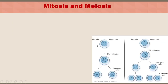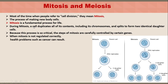To understand chemotherapy classification and mechanism of action, we need to review mitosis and meiosis. In mitosis, the parent cell's DNA replicates and gives two daughter cells. In meiosis, the parent cell DNA replicates, produces two daughter cells, and after a second division, the end result is four daughter cells. Most of the time when people refer to cell division, they mean mitosis — the process of making new body cells.